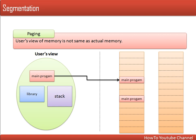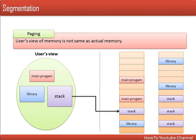But what paging actually does is divide our program into fixed-length pages, and memory is divided into similarly-sized frames — one page can be loaded into any frame. So the user thinks the main program, libraries, and stack are each loaded in memory altogether, but in reality paging divides the main program into multiple pages that can be stored in any frame. This is how paging separates the user's view from actual memory.